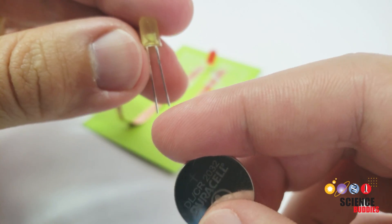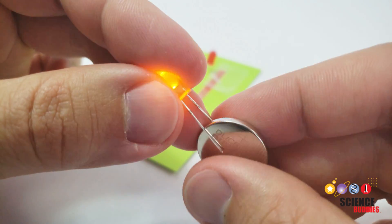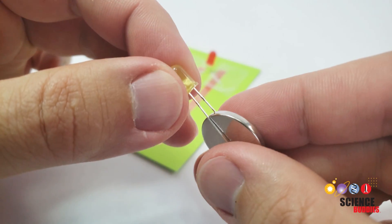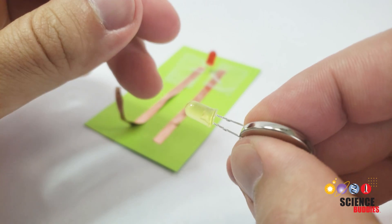The positive side of the LED is indicated by the longer leg. You have to make sure you connect the longer leg of the LED to the positive side of the battery or the LED won't light up. You can see that here if I try reversing the LED.